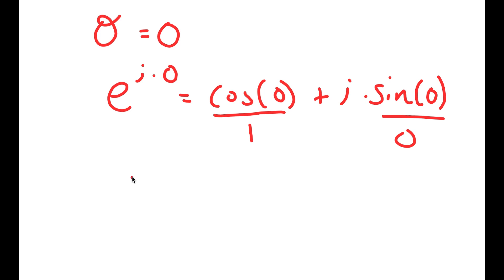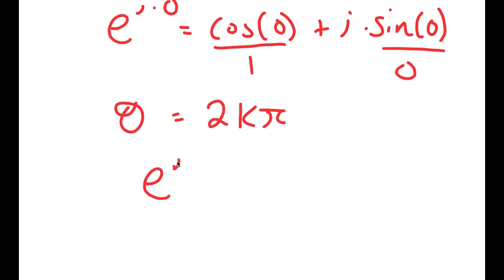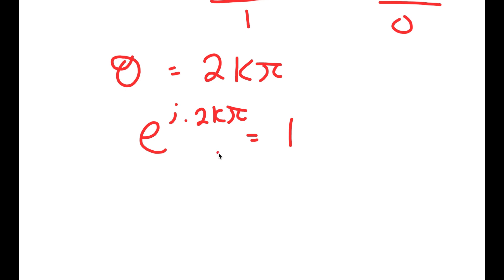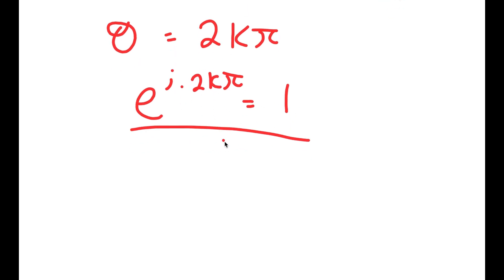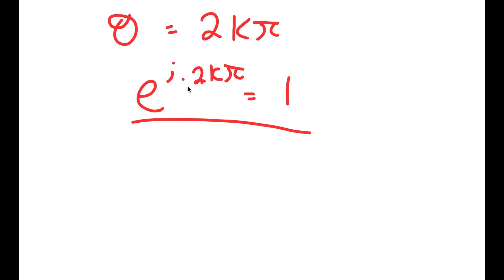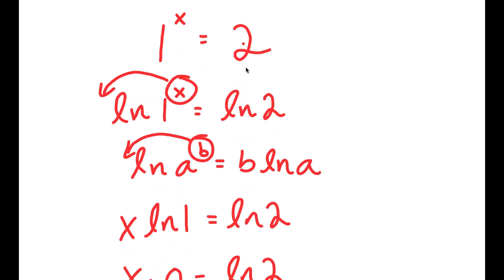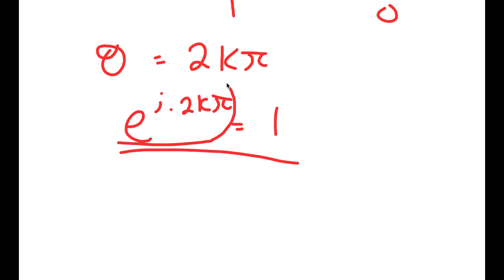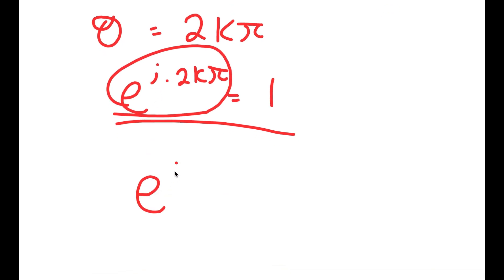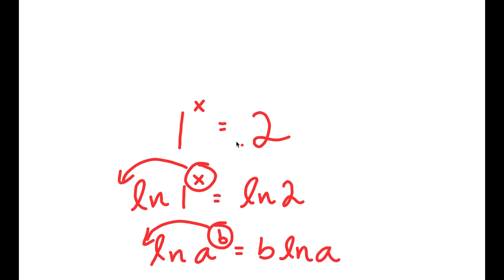More generally, this means theta is equal to 2k pi, so e to the power of i times 2k pi is equal to 1. Because this statement is true, our original equation 1 to the power of x equals 2 can be rewritten by substituting 1 with e to the power of i times 2k pi. So we get e to the power of i times 2k pi, all to the power of x, is equal to 2.